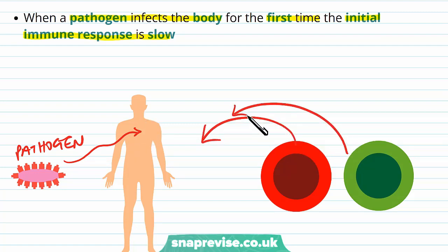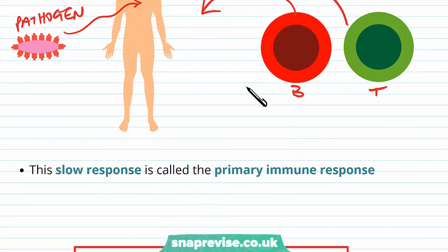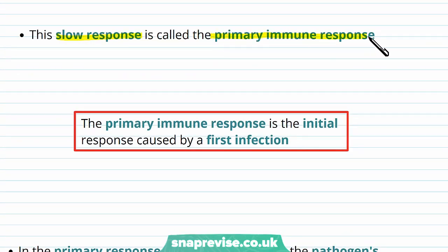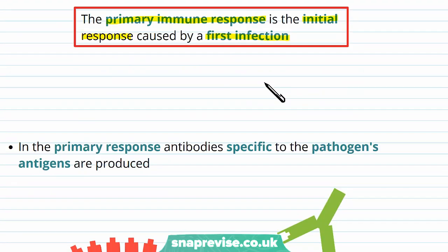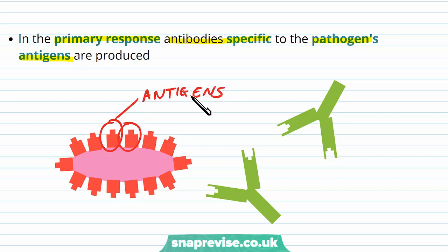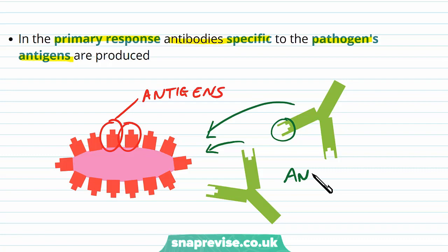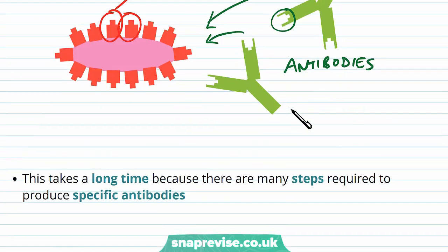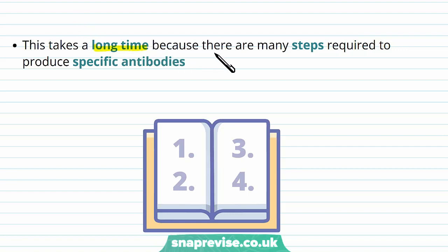In order to get rid of the pathogen we need certain immune cells like B and T lymphocytes to tackle the pathogen, but it takes a long time and so it's very slow. The first slow response is known as the primary immune response — the initial response caused by a first infection. In the primary response, antibodies get made which are specific to the pathogen's antigens and they're produced by B cells. The pathogens have antigens or certain proteins on their surface, and the antibodies produced are complementary in shape to these antigens. But producing these antibodies takes quite a long time because there are lots of different steps required to find the specific antibodies and to make enough of them.